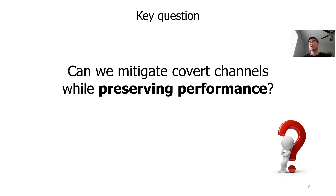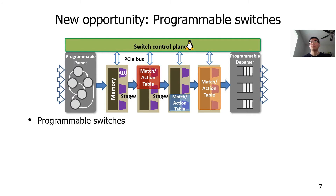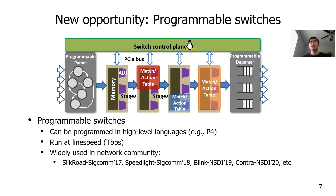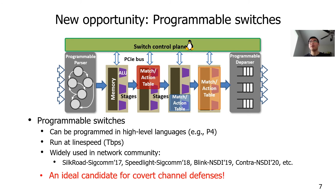Here, we ask a key question: can we mitigate covert channels while preserving performance? We answer this question with yes by proposing our system, Netwarden. Netwarden uses recently proposed programmable switches, which can be programmed with high-level languages like P4 and can run at line speed. The network community has used programmable switches to improve network performance, like designing new load balancers, doing traffic engineering, etc. But we believe they are also ideal candidates for covert-channel defenses. I will show you how to build an efficient and performance-preserving covert-channel defense using programmable switches.